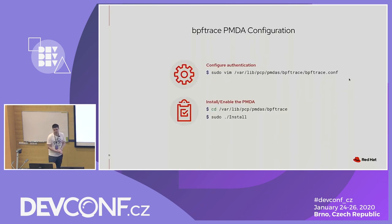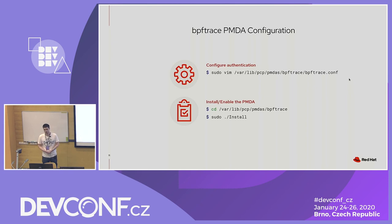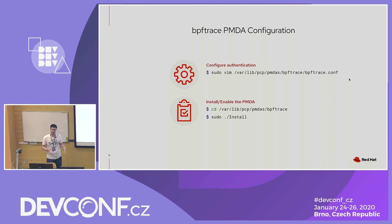Because BPFtrace needs to run as root, it needs a lot of privileges — it can also execute other scripts and read files — so you have to configure authentication. You have two options: either you go with PCP authentication, which is a bit difficult to set up and supports only SASL, or you just set up an Nginx reverse proxy, because everything goes through HTTP, so you can just put a reverse proxy in front of it and use HTTP basic authentication.